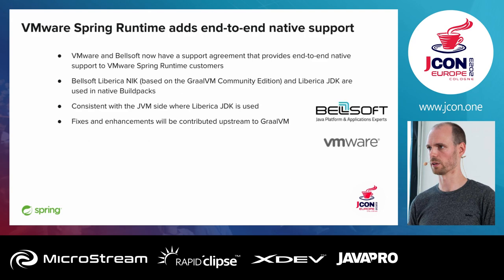VMware offers a commercial offering for the Spring Runtime to help you migrate to 2.7 or delay the deadline for migrating to Spring Boot 3. This has been updated to include native support too. We partnered with Bellsoft — they were already giving us support for the JDK, and now it's also for the native image. Any fixes needed for commercial customers will be backported into the open-source GraalVM, so they don't stay behind vendor logins.